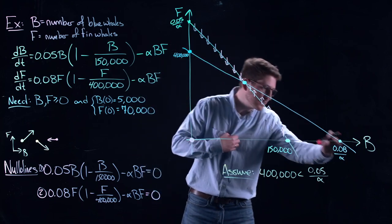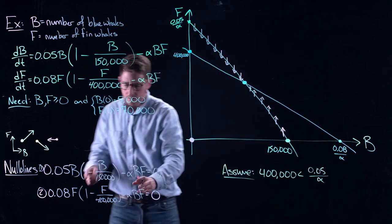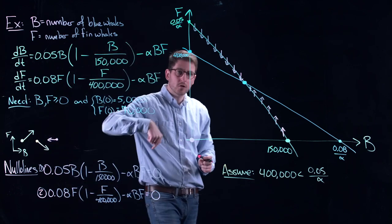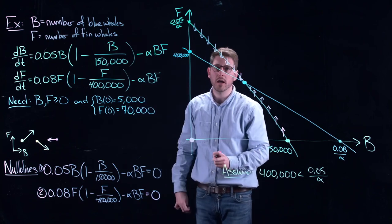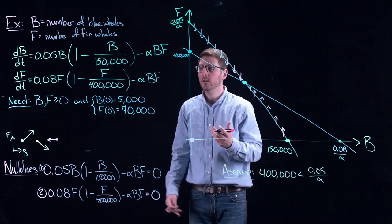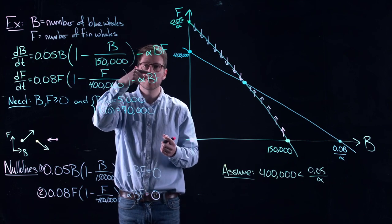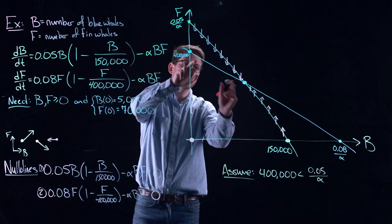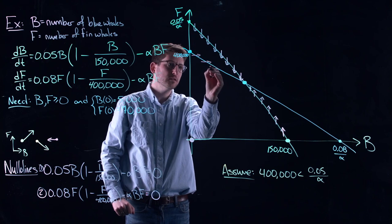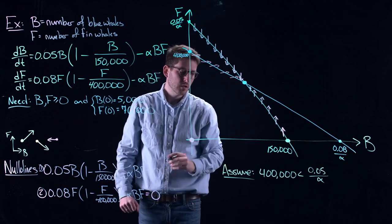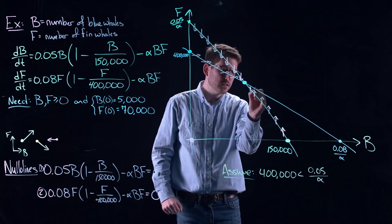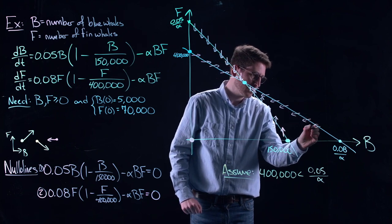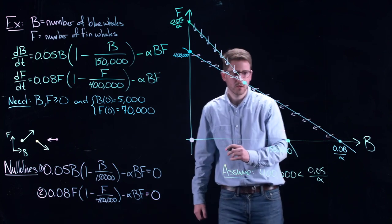Similarly, if I am on the second nullcline, then my dF/dt component is 0. There is no vertical component to my vectors on that line. The only thing that they can do is point to the left or point to the right. And so, when I am on this piece of it, all my vectors are pointing to the right. And when I am on this piece of it, all my vectors are pointing to the left.